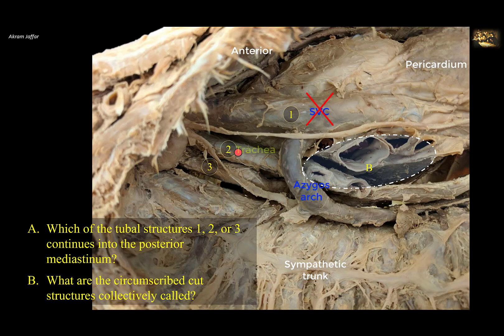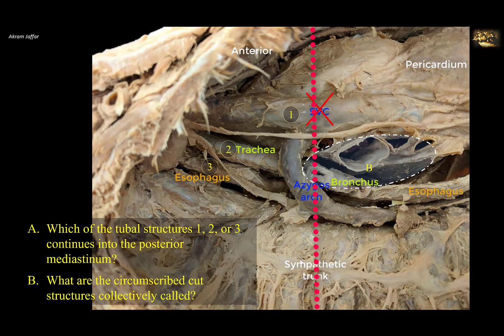Structure 2 is the trachea, as indicated by the tracheal cartilages in its wall. It is located in front of the esophagus in the superior mediastinum. Structure 3 is the esophagus, which is located posterior to the trachea in the superior mediastinum and is compressible, formed of a muscular wall. The trachea divides into right and left main bronchi at the level of the transverse thoracic plane, separating the superior and inferior mediastinum, and thus does not continue into the posterior part of the inferior mediastinum. On the other hand, the esophagus continues into the posterior part of the inferior mediastinum, passing through the esophageal hiatus of the diaphragm. So the tubal structure that continues into the posterior mediastinum is 3.